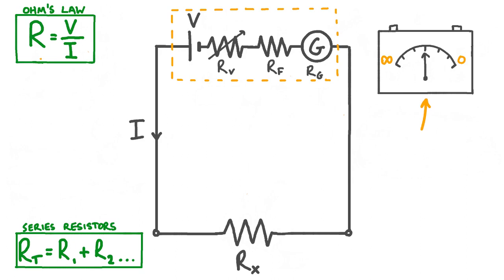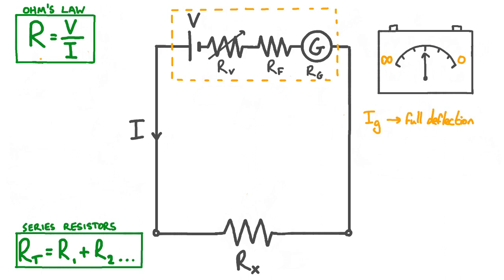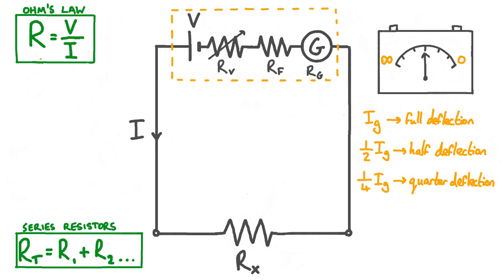However, here we run into a problem. Our ohmmeter measures values of resistance from infinity to zero, but we don't know what any of the values in the middle of the dial actually correspond to. Luckily, we can figure out the scale by using the fact that the deflection of the needle on a galvanometer is proportional to the current. This means that if IG causes full deflection, then a current half this size will cause half deflection, putting the needle exactly in the middle. Similarly, a current of a quarter IG would cause the needle to deflect a quarter of the way around.